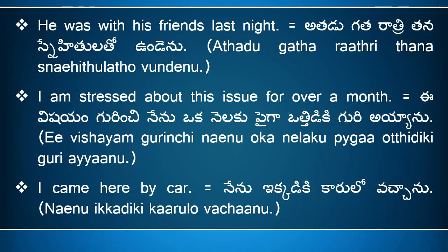'I came here by car' means 'nenu ikkadi ki karu lo vachyanu.' Here, 'I' means 'nenu,' 'came' means 'vachyanu,' 'here' means 'ikkadi ki' — actually 'here' means 'ikkada,' but we take the meaning of 'to,' which means 'ki' or 'ku,' so 'to here' means 'ikkadi ki.' 'By car' means 'karu lo.' So the full sentence is 'nenu ikkadi ki karu lo vachyanu.'